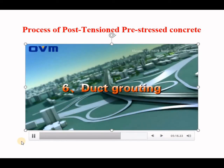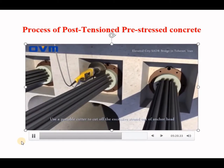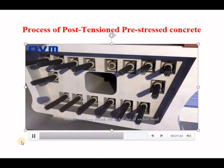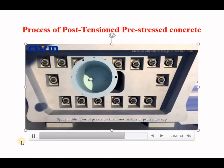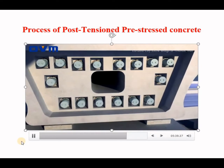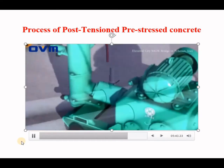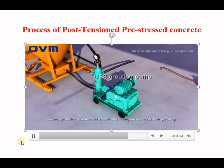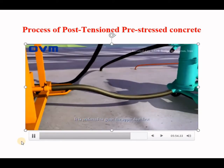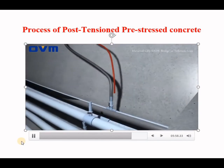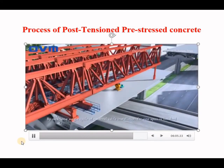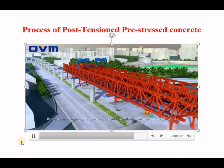For duct grouting: use a portable cutter to cut off the excessive strand out of the anchor head at both ends of the external cable, leaving only 30mm of strand out of the anchor head. Spray a thin layer of grease on the inner surface of the protection cap, then install the cap. Clean up the grouting holes of anchor plates, connect the grouting machine, hoses, and other components. A high-speed mixer and UB3 grouting pump are used for duct grouting, preferably grouting the upper duct first. One single cycle of external cable installation for one span is now finished.